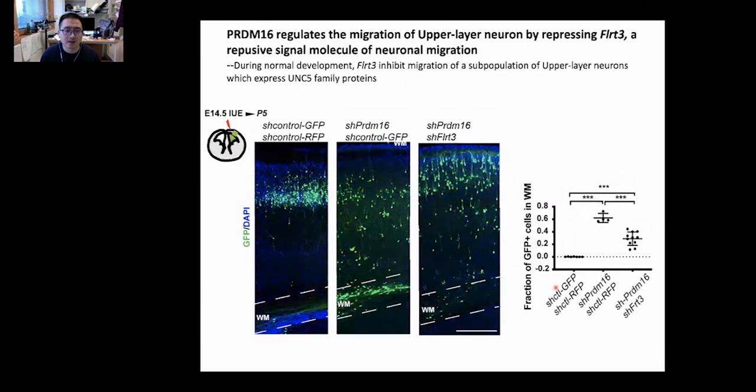To validate the second target, FLRT3, which is a repulsive signal for neuron migration, we did the same experiment. Instead, we collected at a later stage so we can observe migration. As you can see in the control, the GFP-positive cells indicate migrating neurons. When you knock down PRDM16, you see a similar migration defect as in the conditional knockout. When you further knock down FLRT3, you rescue this phenotype. This clearly shows that PRDM16 regulates migration of upper layer neurons by repressing this repulsive signal.